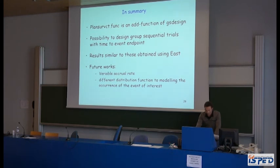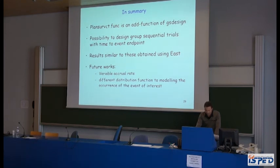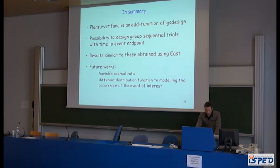In summary, the R function presented is an add-on to the gsDesign package. In one run, the function computes the number of events and the corresponding sample size for sequential clinical trials with time-to-event endpoints. Options allow for fixed follow-up for each patient and potentially different dropout rates in each arm. The results obtained by our function are similar to those obtained using gsDesign. Future work could address variable accrual rates and flexibility beyond the exponential distribution, for example assuming a piecewise exponential distribution.